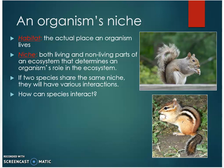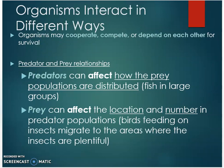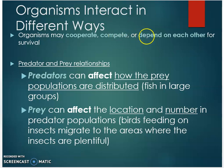So how do species interact with each other? Organisms interact in different ways — they may cooperate, meaning work together; compete, meaning they're working against each other and the strongest survive; or they may depend on each other for survival. In predator and prey relationships, predators can affect how prey populations are distributed. Prey can affect the location and number in predator populations — for example, birds feeding on insects migrate to where the insects are plentiful.